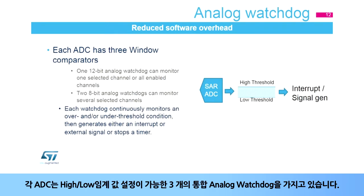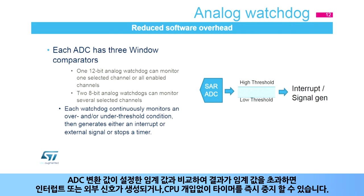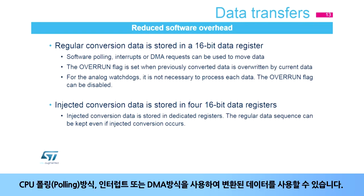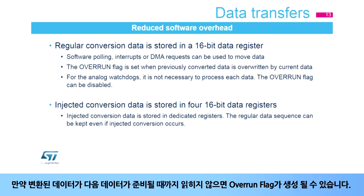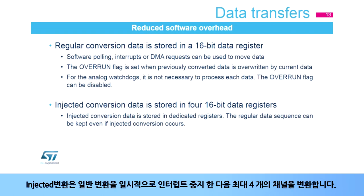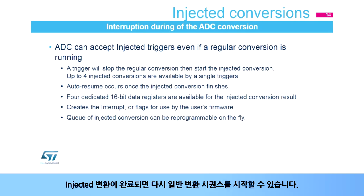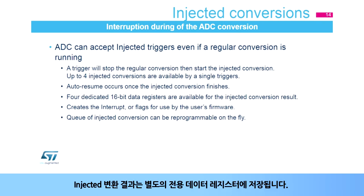Each ADC has three integrated analog watchdogs with high and low threshold settings. The ADC conversion value is compared to this window threshold, and if the result exceeds the threshold, an interrupt or external signal can be generated, or a timer can be immediately stopped without CPU intervention. The ADC conversion result is stored in a 16-bit data register. The system can use CPU polling, interrupts, or DMA to make use of the conversion data. An overrun flag can be generated if data is not read before the next conversion data is ready. For injected channel conversions, four dedicated data registers are available. An injected conversion is used to interrupt the regular conversion and then insert up to four channel conversions. Once an injected conversion is finished, the regular conversion sequence can be resumed, and the injected conversion result is stored in dedicated data registers.